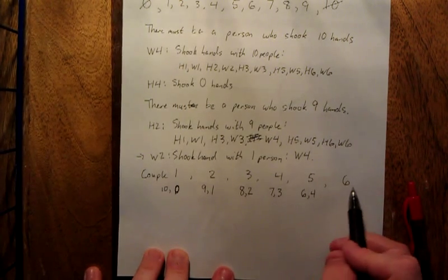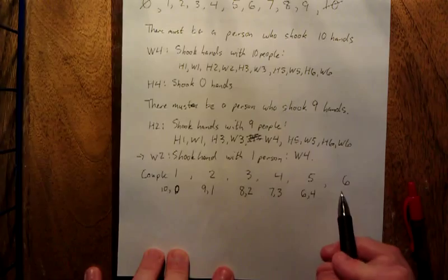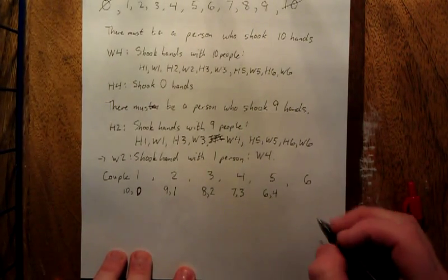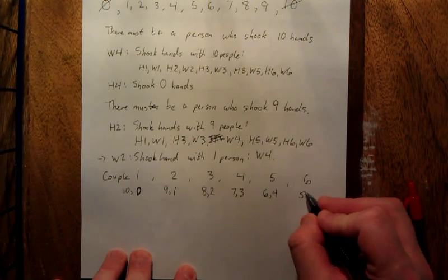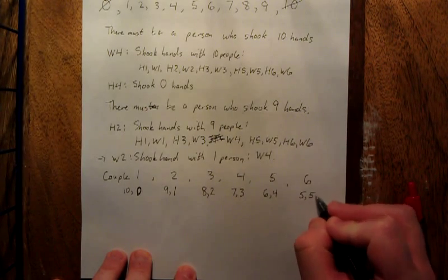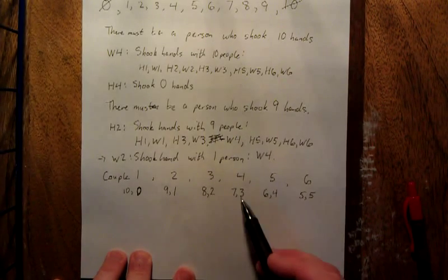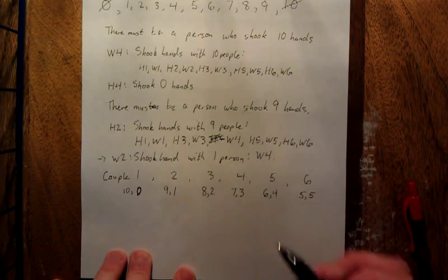Now by this point all the handshakes that can take place just took place. And if you count them all up, you're going to find that couple number six will shake hands with five people apiece. The pattern that we get is that the sum of the handshakes for any couple has to add up to ten.